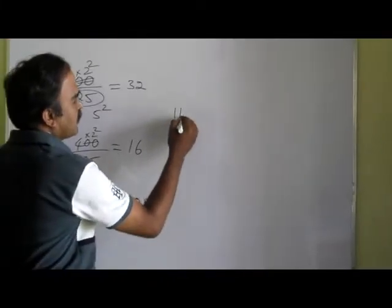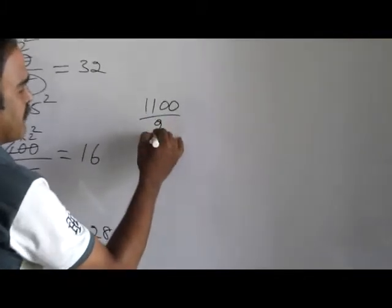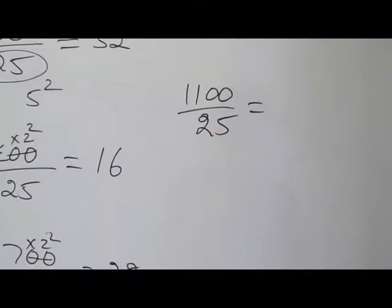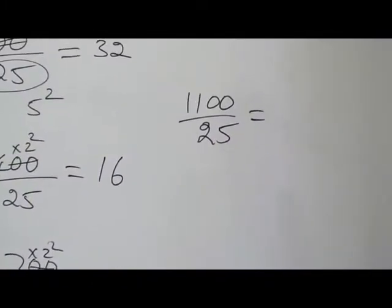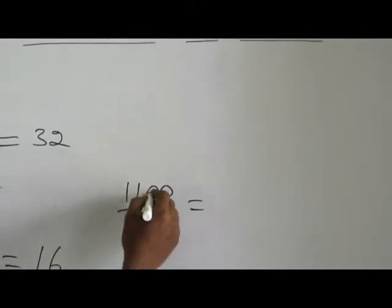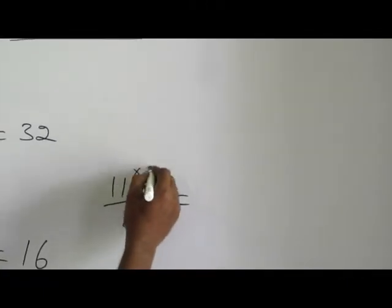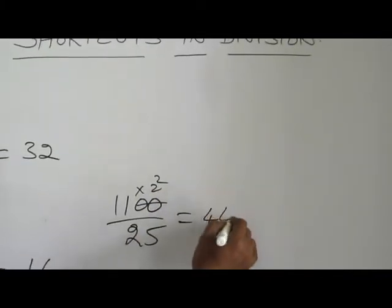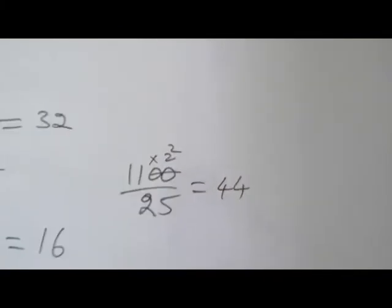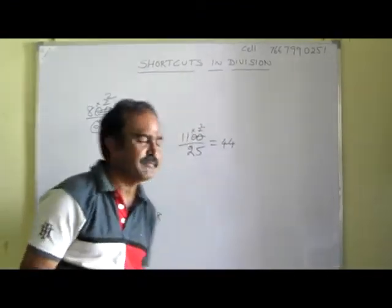I will give you a question to check how quick you are: what is 1100 divided by 25? The time starts now. You are absolutely right — instead of dividing by 25, multiply by 2 squared, which gives 44. In just 2 to 5 seconds you can find the answer.